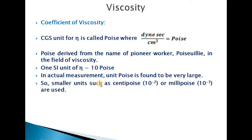In actual measurement, the unit poise is found to be very large for experimental purposes. So measurements are done in smaller units — centipoise or millipoise — which are generally used for measuring viscosity.